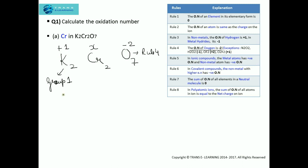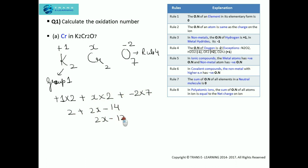As per step two, we need to write the sum of oxidation numbers of all the elements. That is: oxidation number of potassium, plus one, into two atoms of potassium; plus oxidation number of chromium, x, into two atoms of chromium; plus oxidation number of oxygen, minus two, into seven atoms of oxygen. This gives us two plus two x minus fourteen, which simplifies to two x minus twelve. As per step three, potassium dichromate has no net charge, so it is a neutral compound.